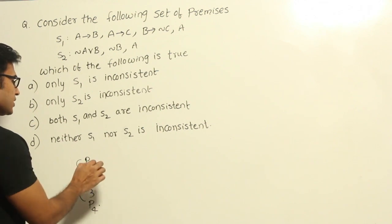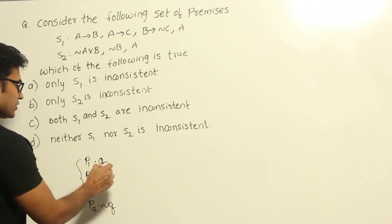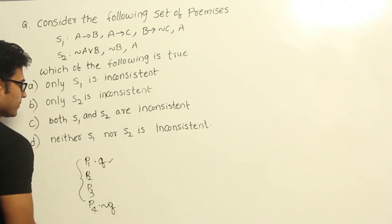So what I mean to say is if you have one of the premises, let's say some Q, and if you have other premises negation Q, then it means that we are trying to say that Q is true and also negation Q is true.